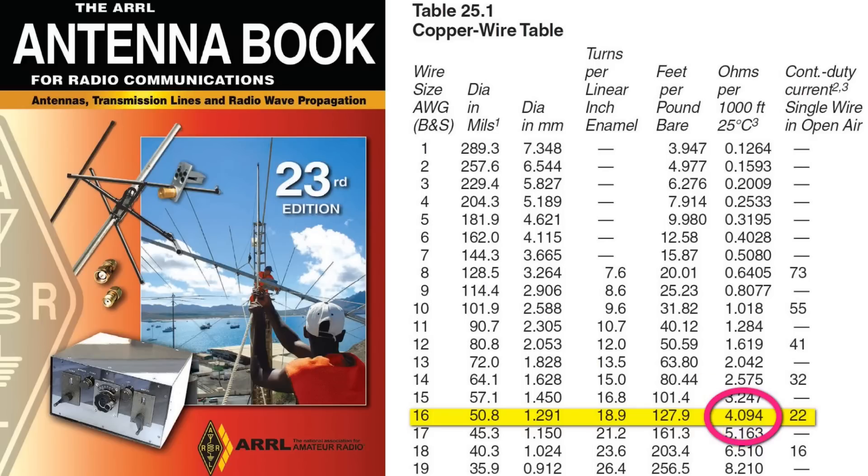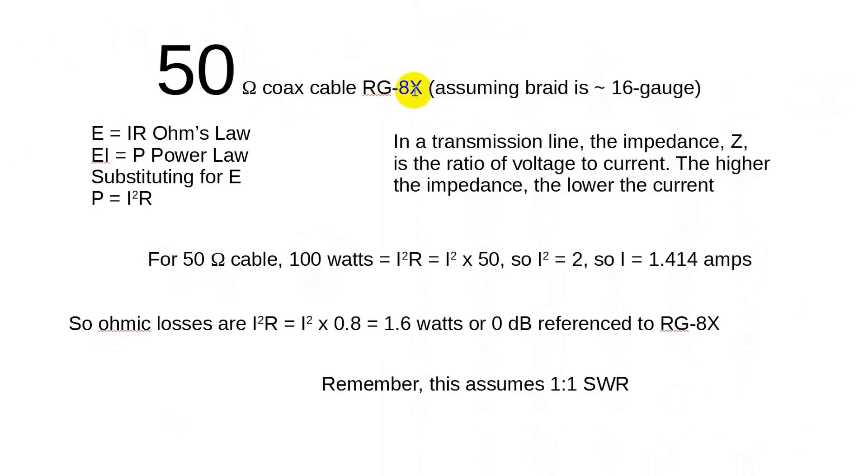So let's look at the 50-ohm case here. This is 50-ohm coax cable RG-8X, assuming that the braid is about the same equivalent gauge as the center line. We're going to start with some equations here. E equals IR, that's Ohm's law. E times I is voltage times current, which is power in watts. If we substitute for E here, since E equals IR, we can plug in IRI, or I²R.